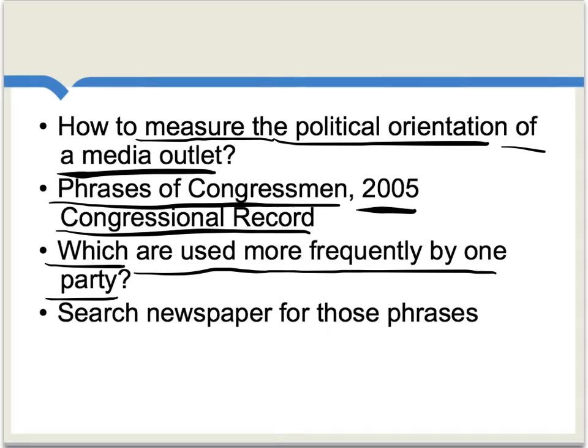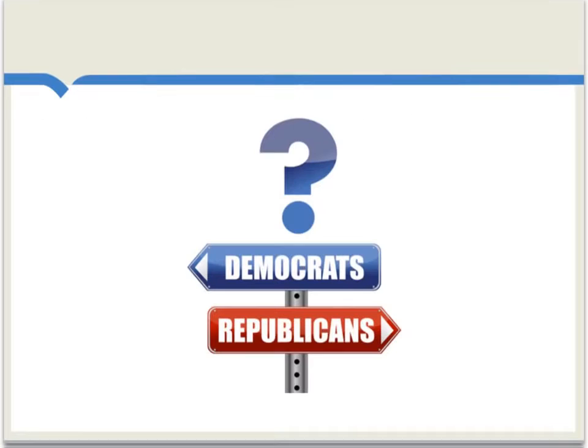When it comes to the war in Iraq, Republicans used to call it the war on terror, and Democrats would call it the war in Iraq. Given those correlations, what the authors then do is they search newspapers for those phrases. To sum that up, we are matching the phrases in newspapers with the speeches of either Democrats or Republicans.